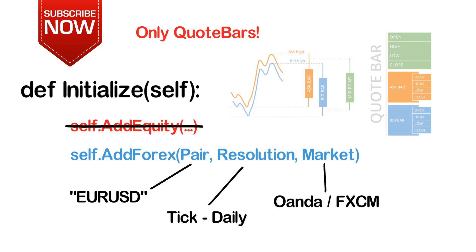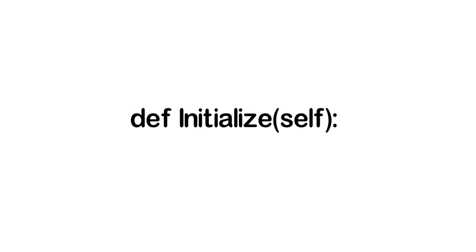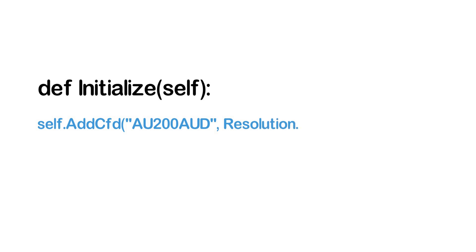Before we move on to implementing an actual example Forex bot, let me quickly show you how you can add data for CFDs. Since this is very similar to Forex, I will not create an actual trading bot for CFDs in this video. The CFD data also comes from OANDA, which currently supports 51 different contracts. However, note that live trading these contracts is only supported for non-US residents at the moment. To add CFD data, you can simply use the addCFD method, which works pretty much the same as the addForex method. For a full list of the supported CFDs, check out the documentation page linked below.